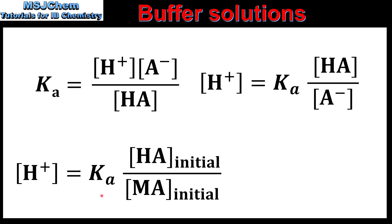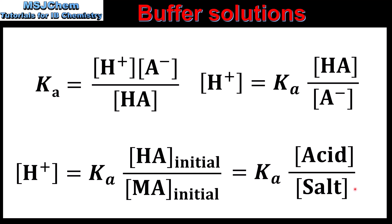So the H⁺ concentration is equal to Ka multiplied by the initial concentration of the weak acid over the initial concentration of the salt. We can simplify this to: [H⁺] = Ka × [acid] / [salt]. If we know the initial concentrations and the Ka of the weak acid, we can calculate the hydrogen ion concentration and then take the negative log to find the pH.